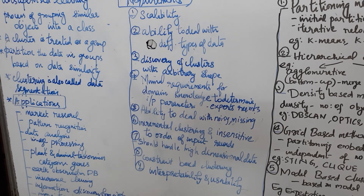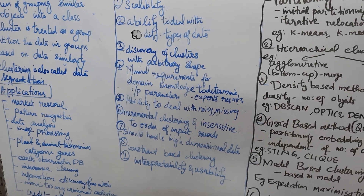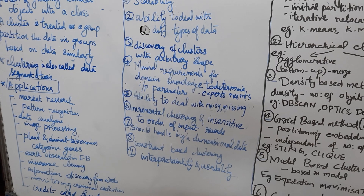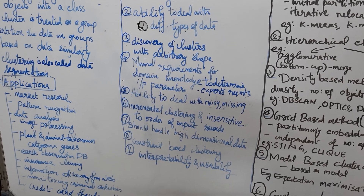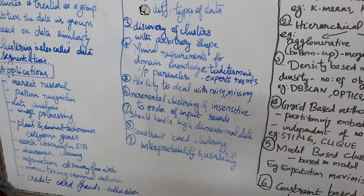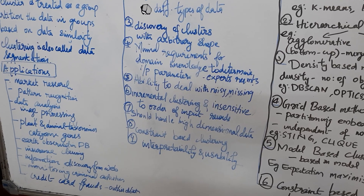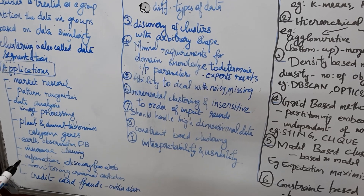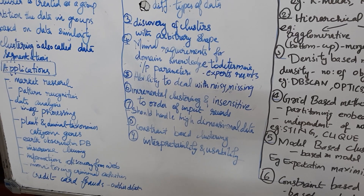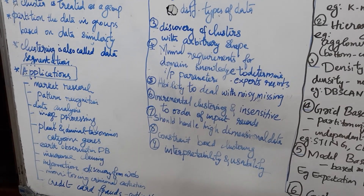Another application is plant and animal taxonomies to categorize genes — we can easily categorize the gene structure in plant cells using clustering. Then earth observation databases, which includes finding earthquake epicenters or clustering lands which have similar properties. Also insurance claiming to identify insurance holders, information discovery from the web, and monitoring criminal activities which have similar features or similar behavior.